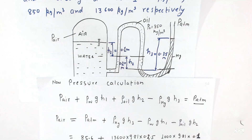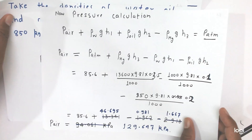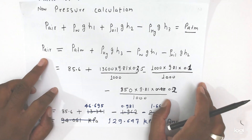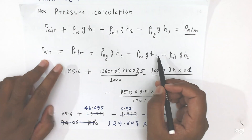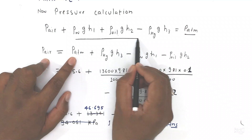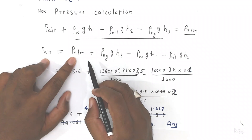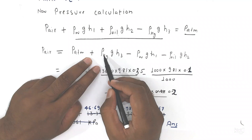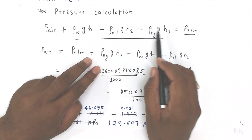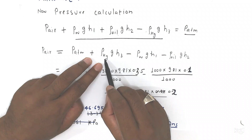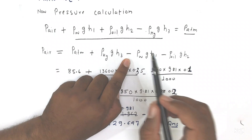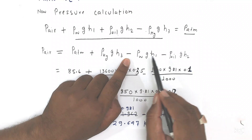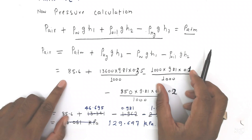Now we will solve for the air pressure. We will rearrange the equation: P_air = P_atm + rho_hg × g × h3 − rho_w × g × h1 − rho_oil × g × h2. We will now put in the values. Atmospheric pressure is 85.6 kilo Pascal, density of mercury is 13600 into 9.81 into 0.35.